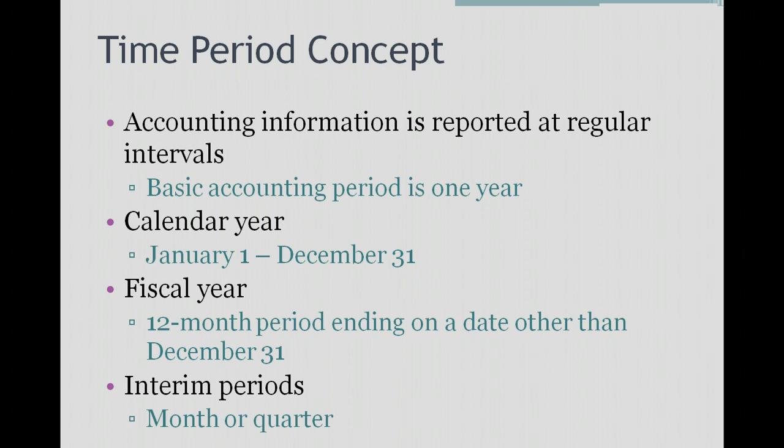For example, Walmart's fiscal year runs from February 1st to January 31st. They are not a calendar year company. Why is that? Walmart's a retailer, and they have a lot of business going on during the month of December — during Thanksgiving and Christmas season. They typically pick their accounting year end on a time when their retail business is slow, so their accounting year end is January 31st of every year.